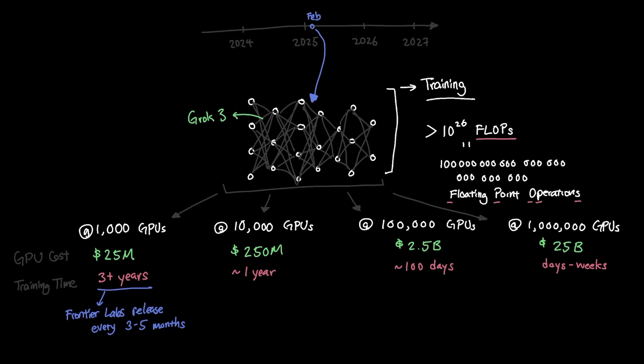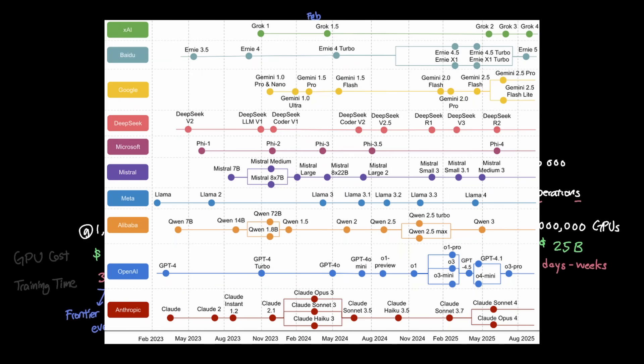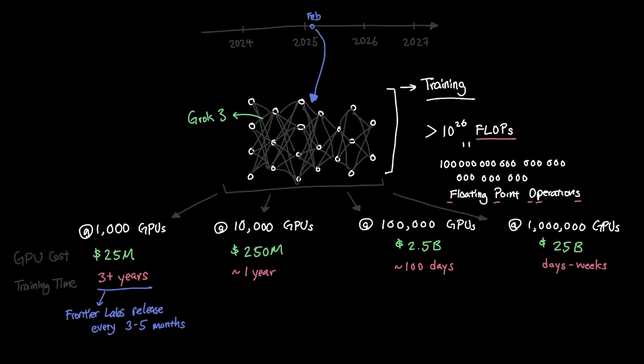We know that the AI industry moves at an increment of three to five months between major releases from other frontier labs. So having only 1,000 GPUs is just not that feasible. And if you pair that with the fact that there are a growing number of frontier labs releasing models in their own timeline, you'll likely see major model releases every month.